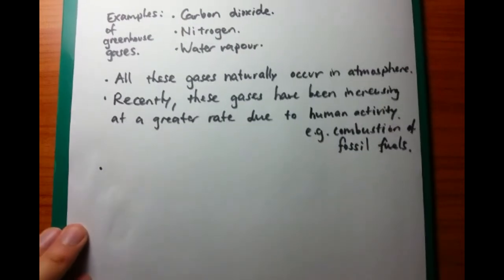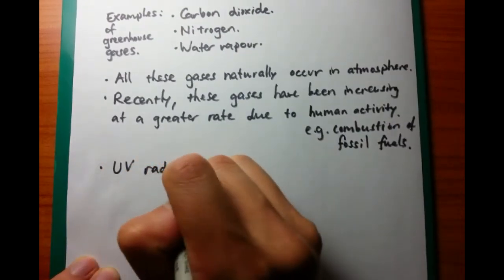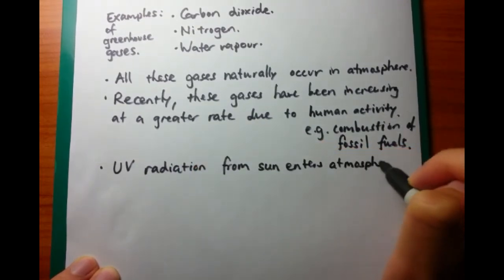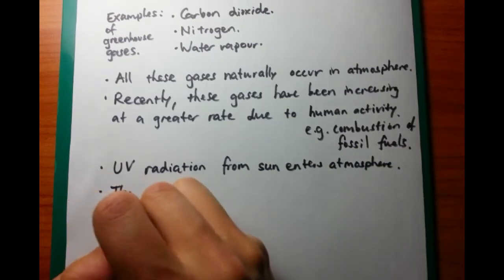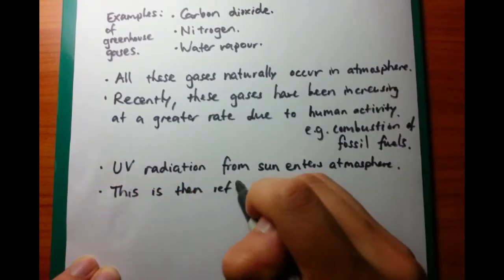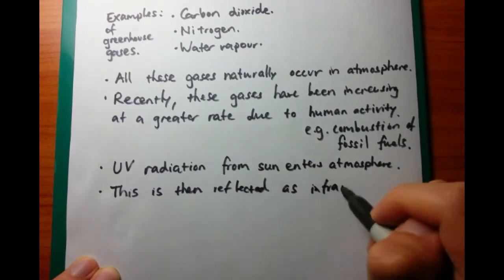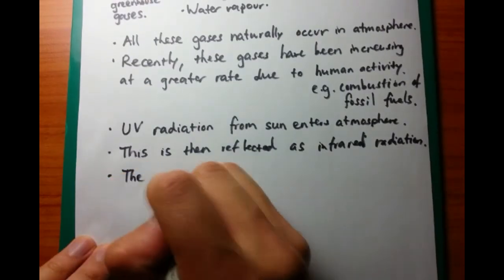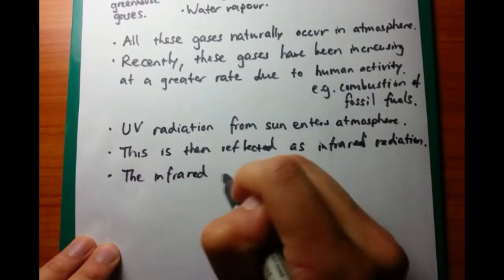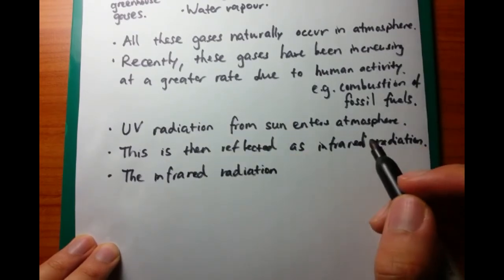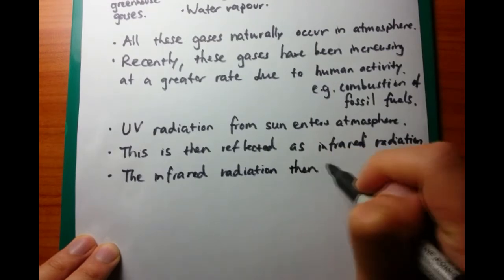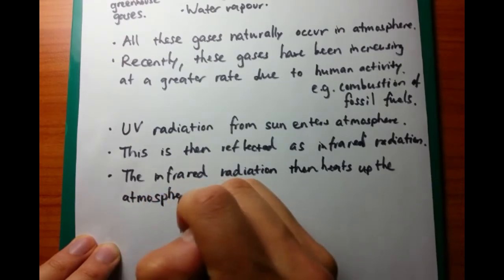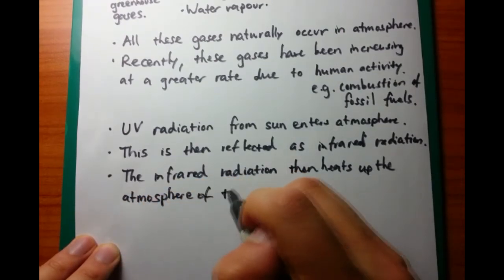The next part we need to talk about is the actual way that the greenhouse effect occurs. We need to talk about the different types of radiation involved. The first type is UV radiation, which comes in from the sun — you can remember this because UV radiation is what causes sunburns and skin cancer. It's then reflected from the earth back into the atmosphere as infrared radiation. It's the infrared radiation that causes the increase in temperature, or heating up, of the atmosphere.